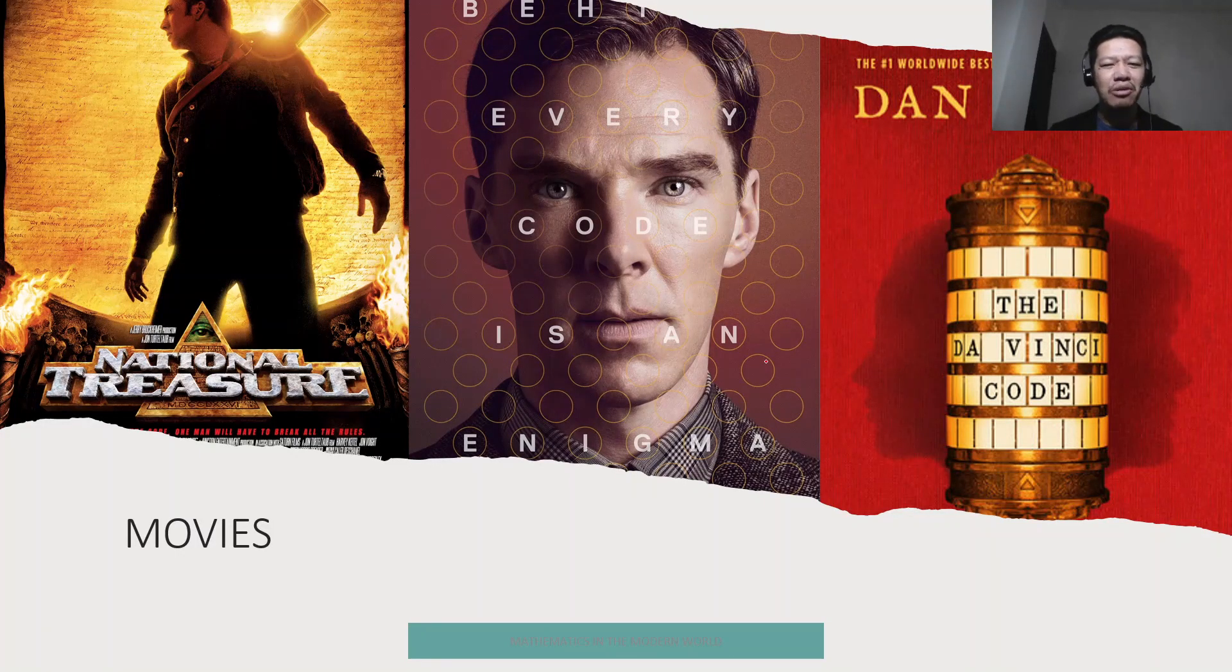These are examples of some movies wherein they actually feature the concepts or ideas of cryptology or codes and ciphers. The National Treasure, the Imitation Game, which is actually the story of a famous mathematician and programmer, Alan Turing, the Imitation Game, which actually features also World War II, and the famous novel, they made a movie out of it, Da Vinci Code. And you may actually watch these movies and learn how the topic cryptology codes was used in these movies.